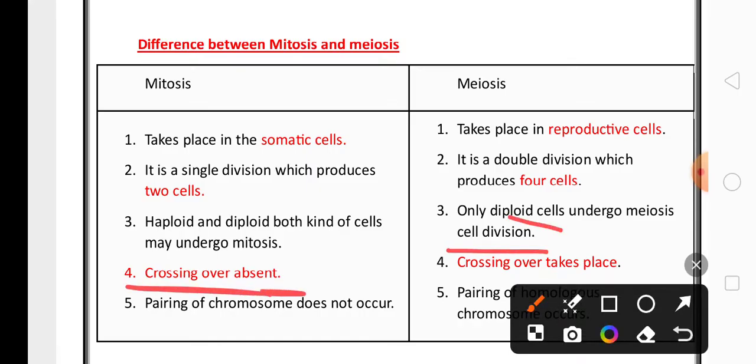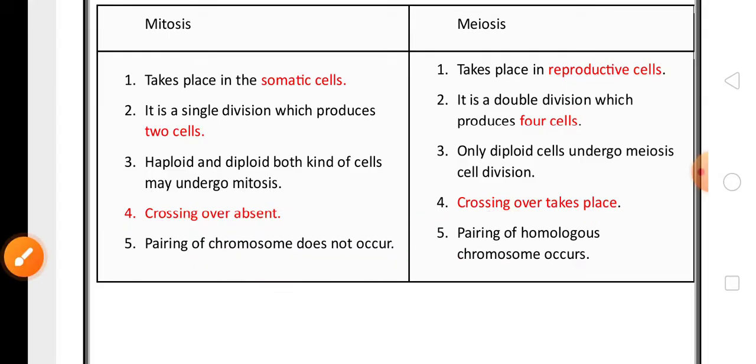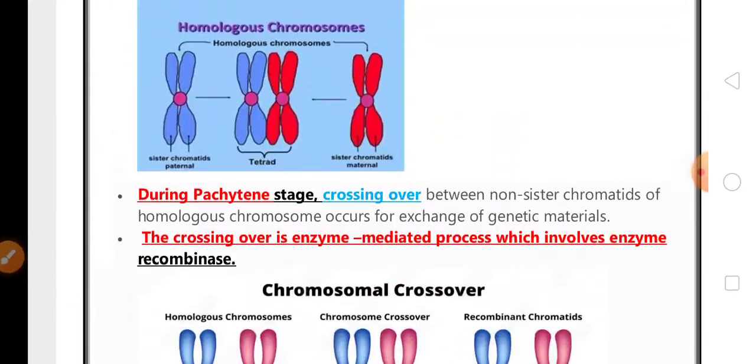In mitosis, no crossing-over occurs, whereas in meiosis there is crossing-over. In mitosis, pairing of homologous chromosomes does not occur, whereas in meiosis, pairing of homologous chromosomes occurs. These are some of the important topics from this chapter. Thank you.